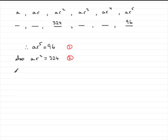Equation 1 divided by equation 2 in this case, let's just put that down. 1 divided by 2. What does it give us? Well, we would have AR to the power 5 divided by AR squared would equal 96 divided by 324.